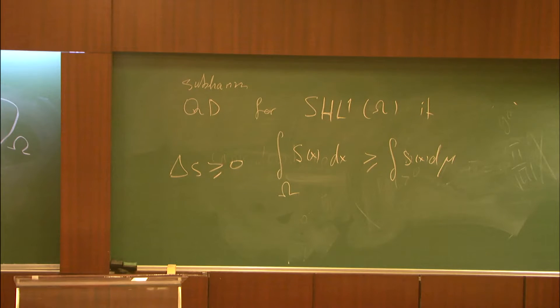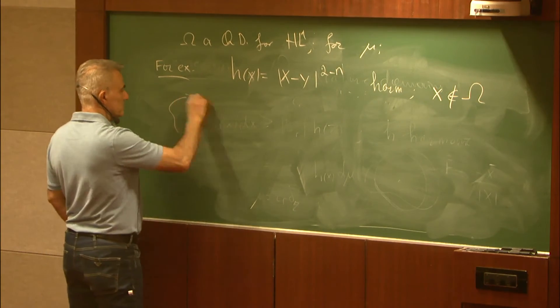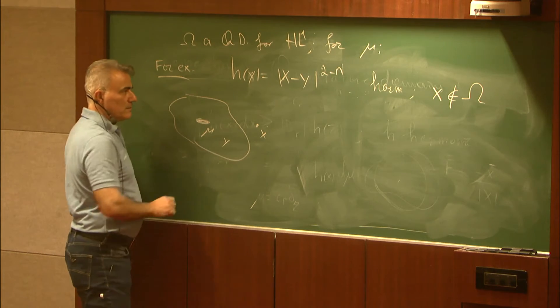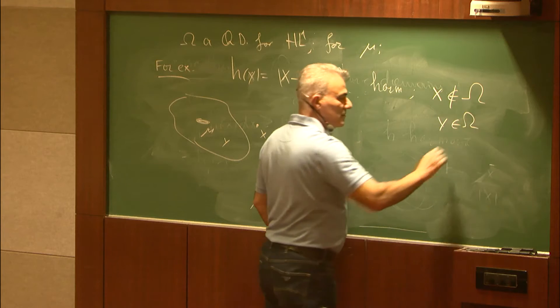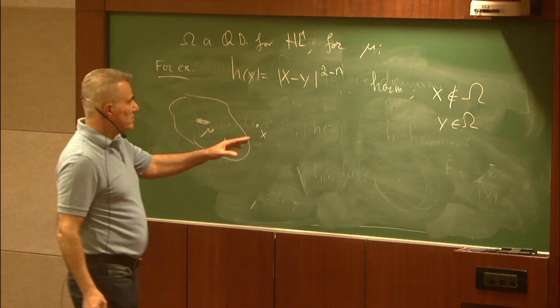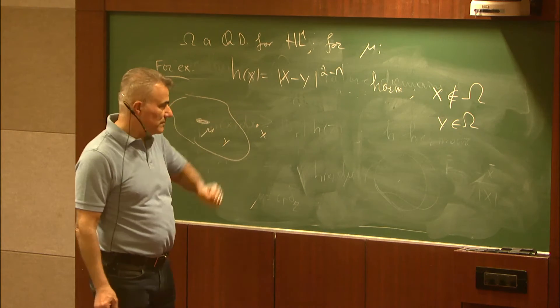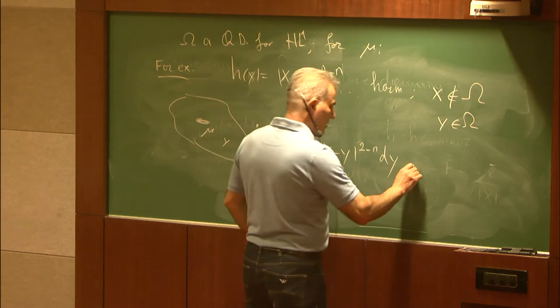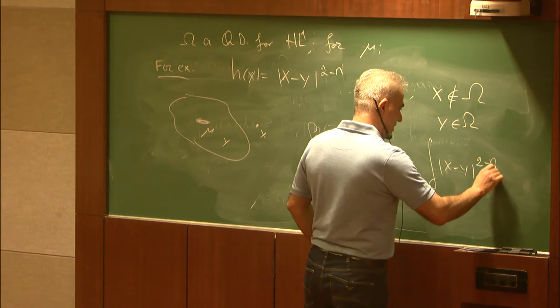Suppose this is the quadrature domain for some measure μ. Then this is going to be harmonic when x is not in omega. When x is here this function is of course harmonic because y is here. When y is in omega and x is not in omega, they never meet and this function is harmonic. So the integral of |x-y|^(2-n) dy over omega equals the integral of |x-y|^(2-n) dμ(y).